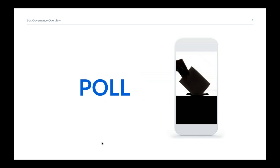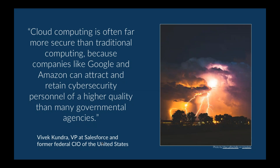Vivek Kundra, former CIO of the United States, likes to say cloud computing is often more secure than traditional computing because companies like Google and Amazon can attract and retain personnel of higher quality than many government agencies. Cloud, for those old-school folks, is essentially internet-based terminal services — you go to a terminal, put in what you need, and get output at a centralized location. Basically it's a set of infrastructure, platforms, and applications put together.